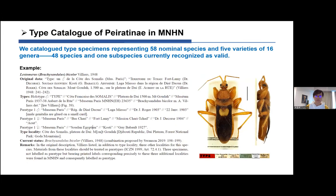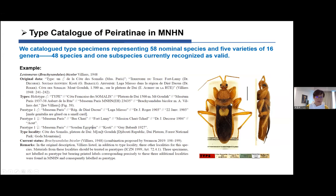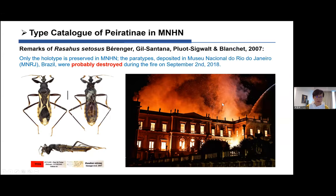We catalogued type specimens representing 58 nominal species and five varieties of 16 genera, with 48 species and one subspecies still currently valid. For each species we provided the original data copied from the original paper, all type information, type status, label information, type locality, current status, and any related remarks, along with images of at least the holotype.